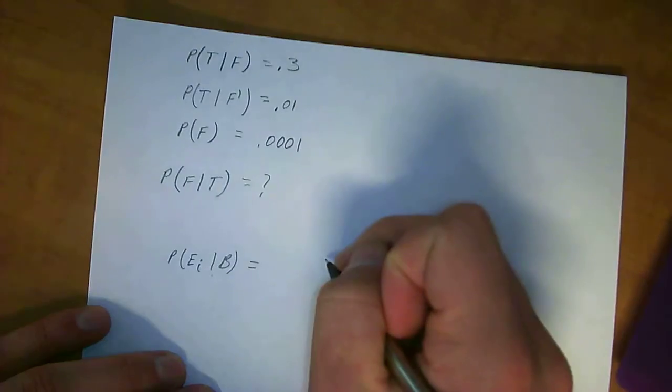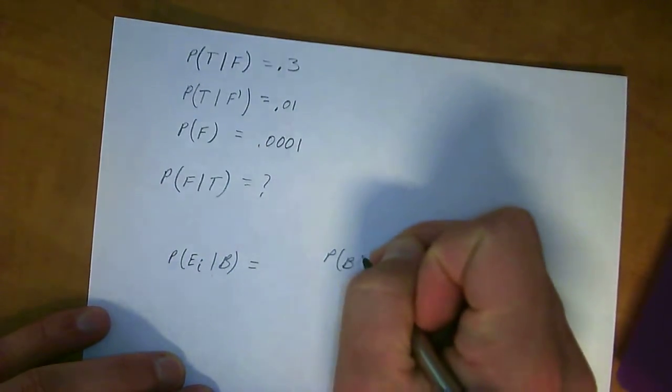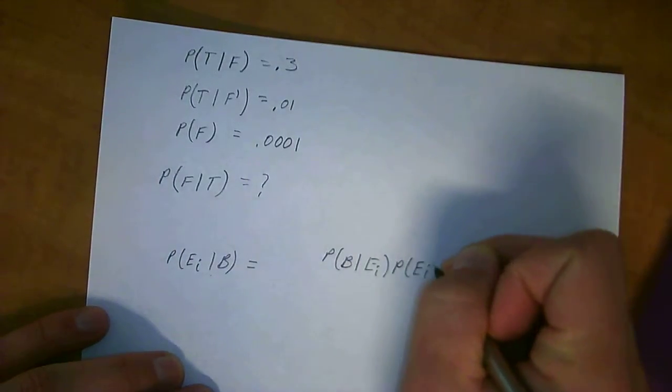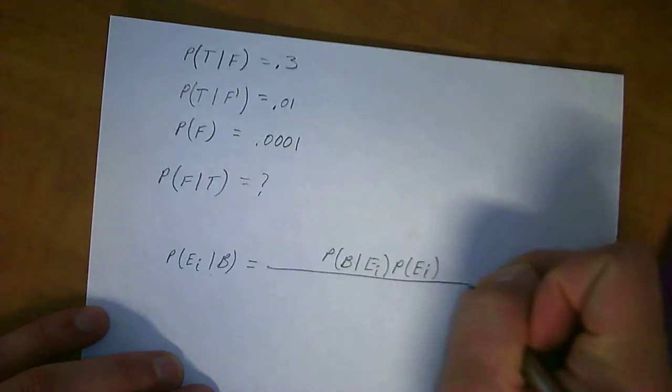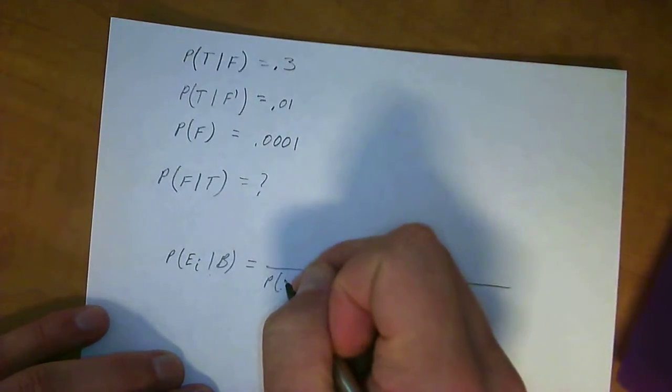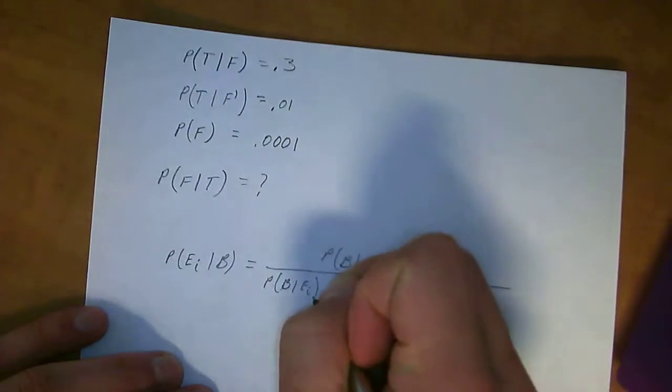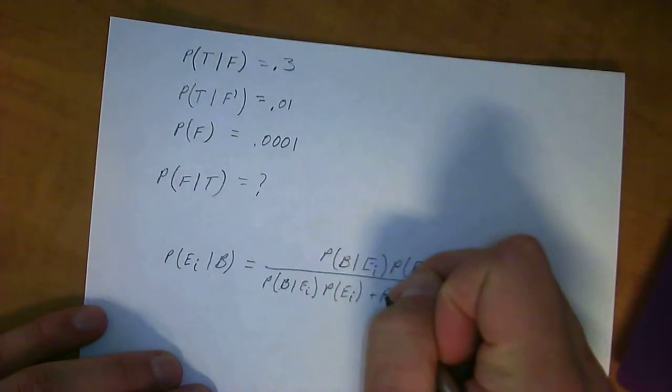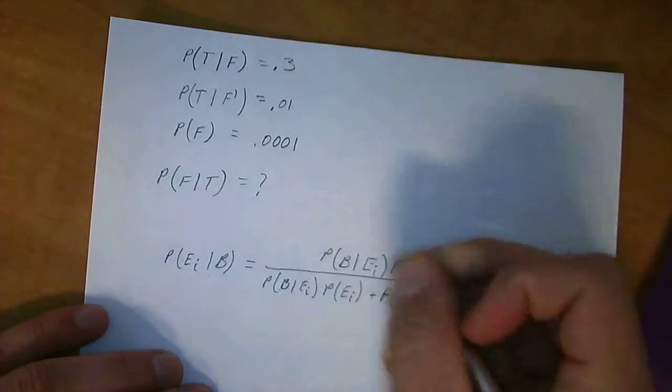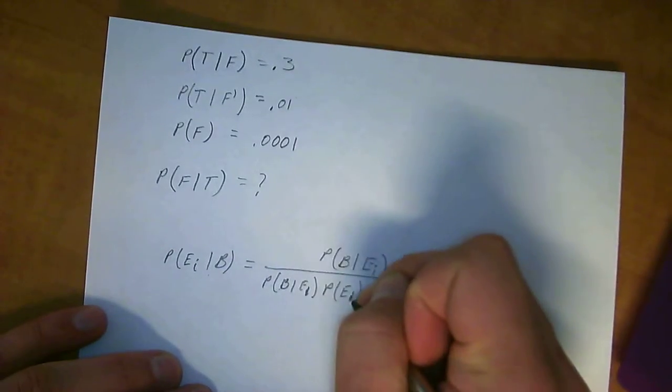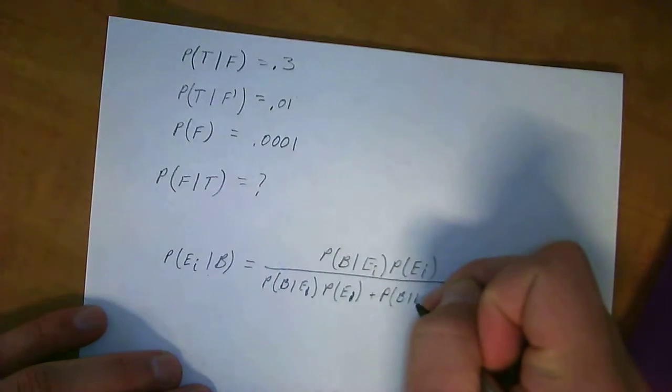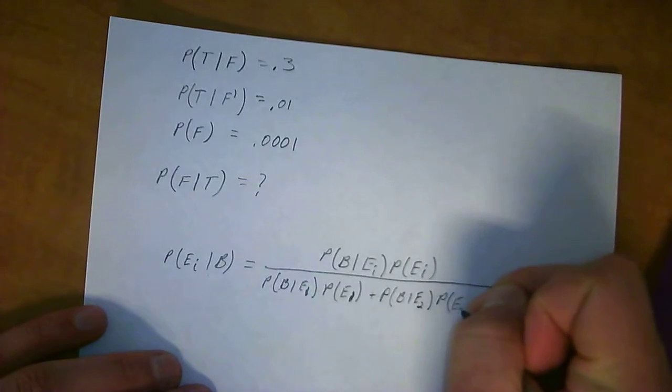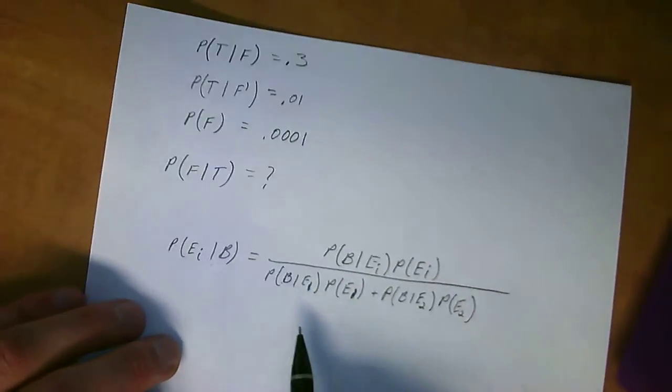So, Bayes' theorem generically is the probability of Ei given B is equal to the probability of B given Ei times the probability of Ei, all over the probability of B given E1 times the probability of E1, plus the probability of B given E2 times the probability of E2.